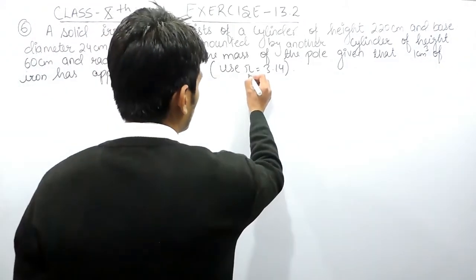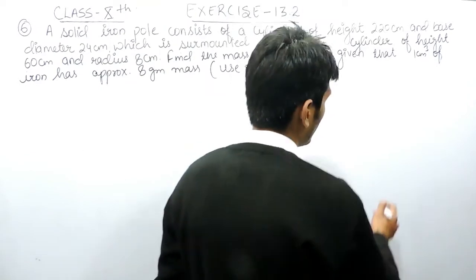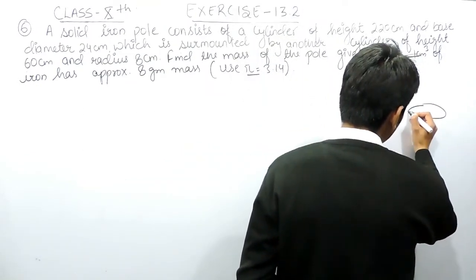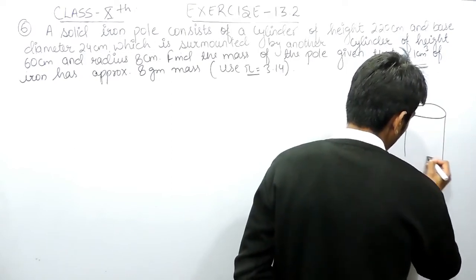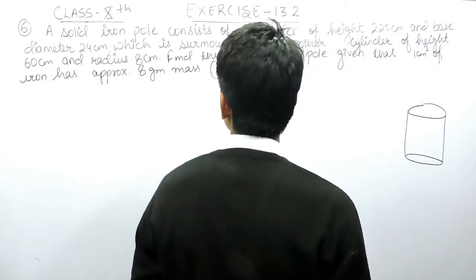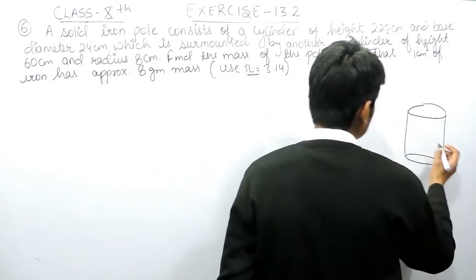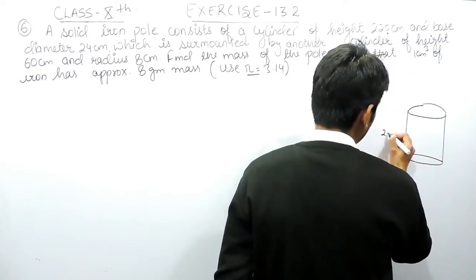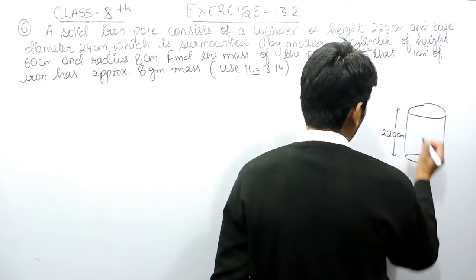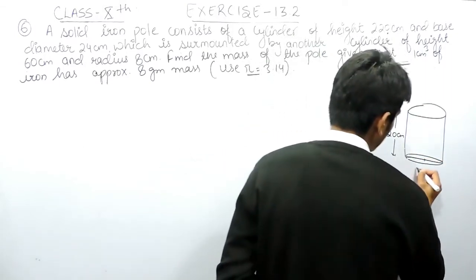You have to use here the value of pi as 3.14. Now first of all let's make a diagram for this pole. It is given that the pole consists of a cylinder whose height is 220 cm and the diameter is 24 cm.